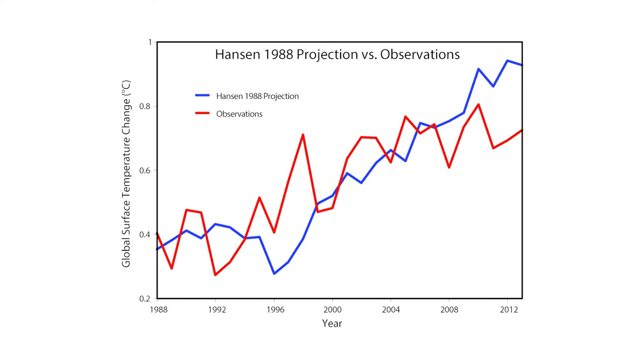Hansen projected that between 1988 and 2015, the Earth's average surface temperature would warm about 0.67 degrees Celsius, whereas it actually warmed about 0.5 degrees Celsius during that time.